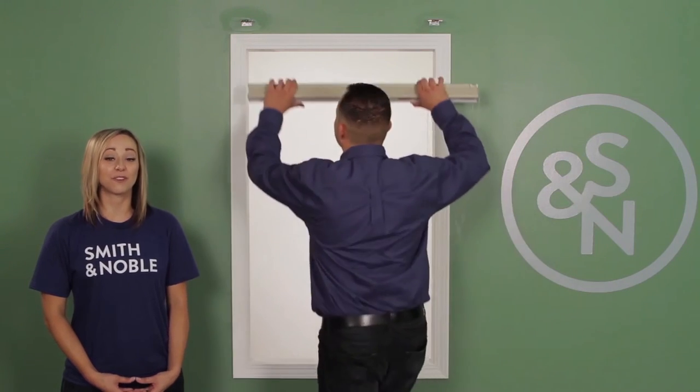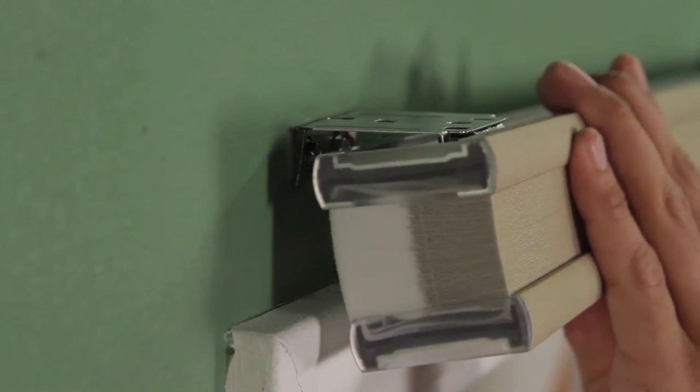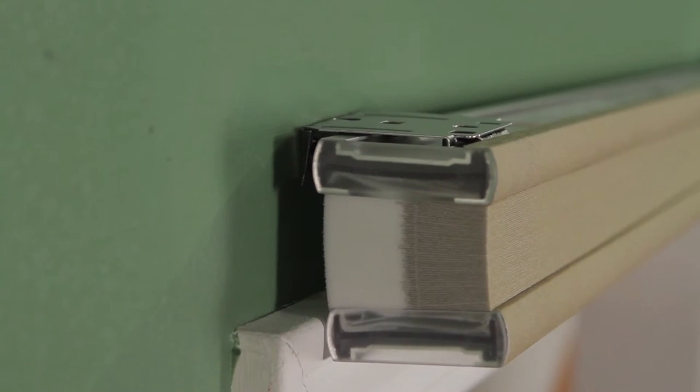Now we are going to hang the shade. Position the headrail with the front lip resting on top of all the brackets. Make sure that no fabric is pinched between the brackets and the headrail. Next, push the headrail firmly upward and toward the window until the groove at the bottom of the headrail snaps into place.